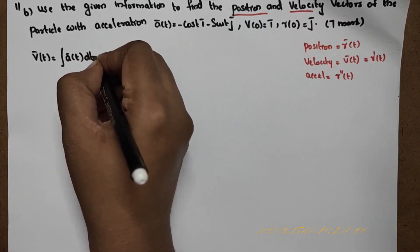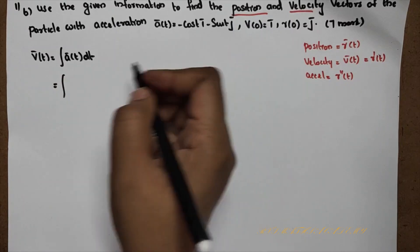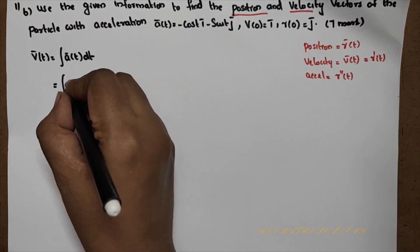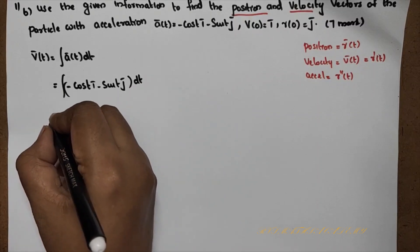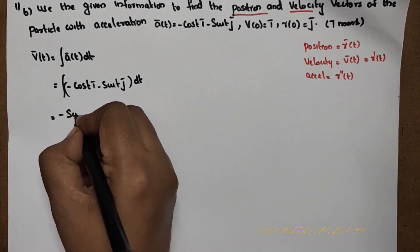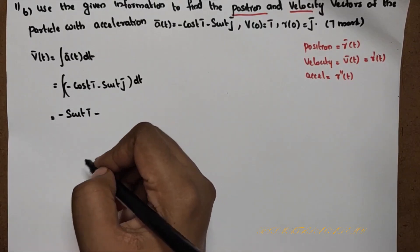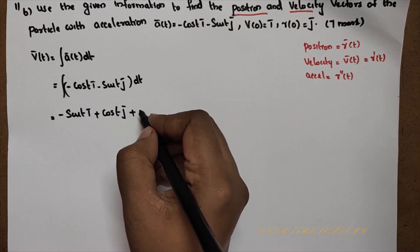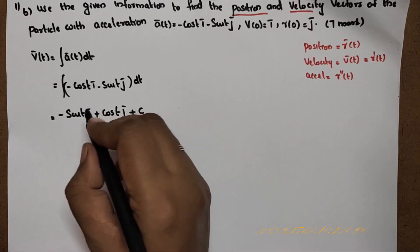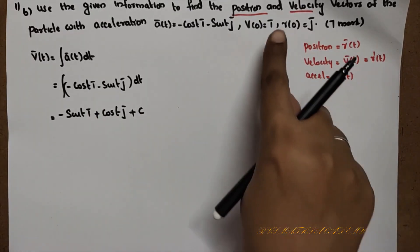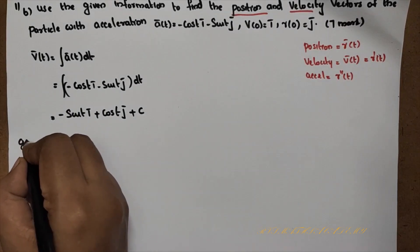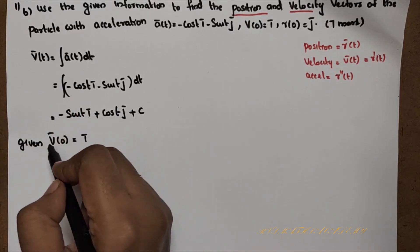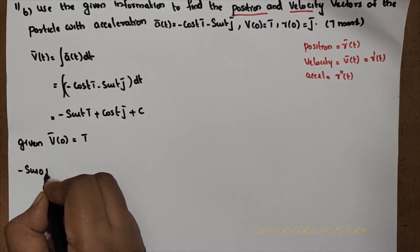Integrating a(t) = −cos(t) i − sin(t) j: integral of −cos(t) is −sin(t), and integral of −sin(t) is +cos(t). So v(t) = −sin(t) i + cos(t) j + C. Using the initial condition v(0) = i to find the constant C.